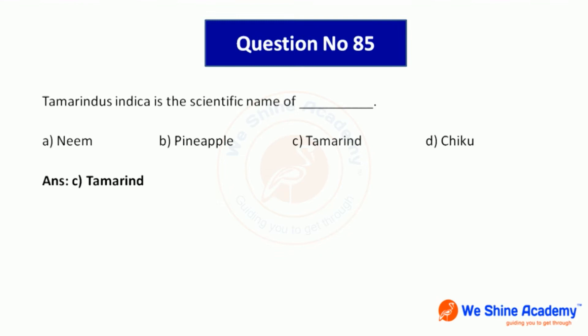Question number 85: Tamarindus indica is the scientific name of which plant? Options include pineapple, tamarind, and others. Tamarindus indica is the scientific name of tamarind. Answer: tamarind.